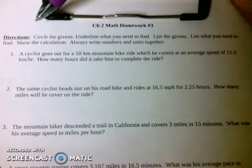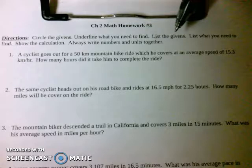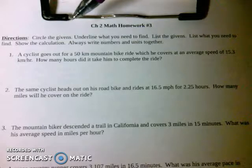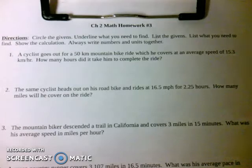First we read our directions. We've got to circle the givens. We need to underline what you need to find. You need to list the givens. You need to list what you need to find. And then to show your calculation, always write numbers and units together.